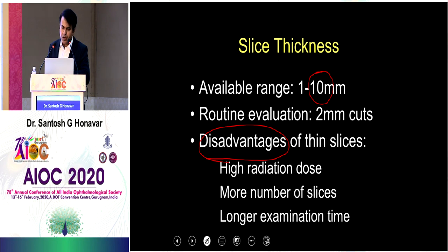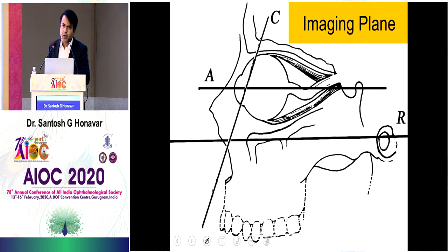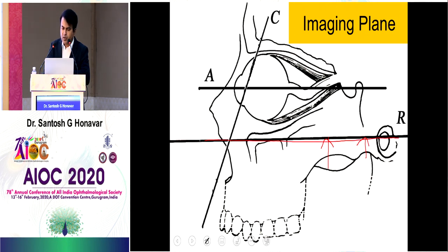Even 0.5 mm cuts are possible without increasing radiation dose to the patient. Fat produces intrinsic contrast, but if you have a vascular lesion you must ask for contrast enhancement — otherwise surgically you may not benefit from the CT scan if you don't know the blood supply of the tumor. Now these are the two imaging planes: axial and coronal. Axial scan is parallel to the Reid's line, which is the orbitomeatal line — from the external auditory meatus to the floor of the orbit.